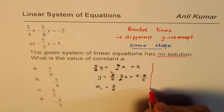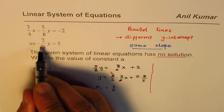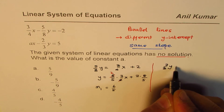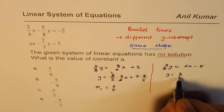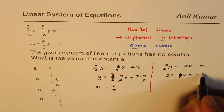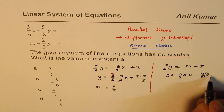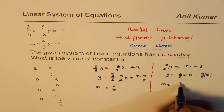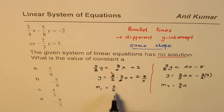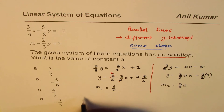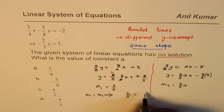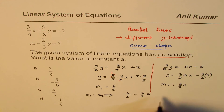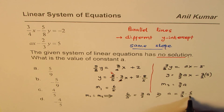Now let's do the second equation. We have 2 over 3y equals ax minus 5, so y equals 3 over 2 times ax minus 3 over 2 times 5. The slope in this case is 3 over 2a. For the lines to be parallel, these should be equal, so m1 should equal m2.